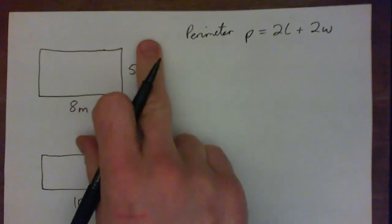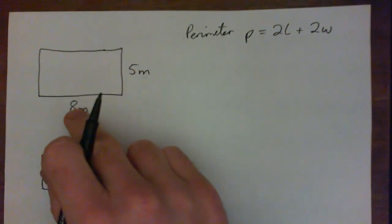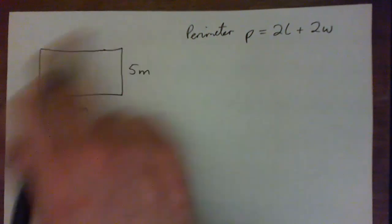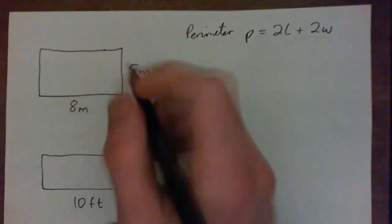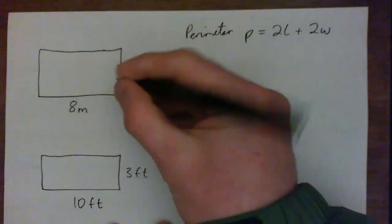We'll start with this first one. The most common mistake is to just add 8 and 5 and get 13, or multiply them and get the area, which is 40 square meters. The area is 40 square meters. The surface area is the area of the surface. Perimeter is the distance around the outside.